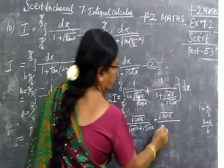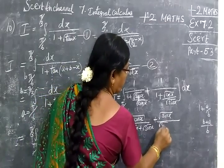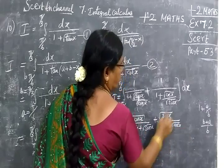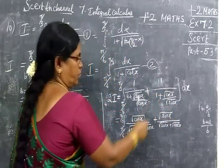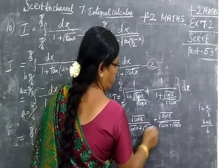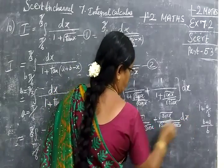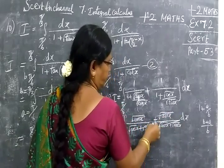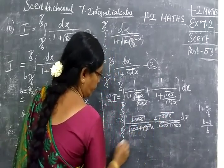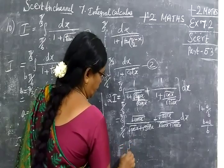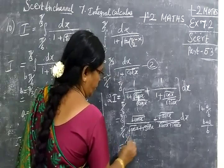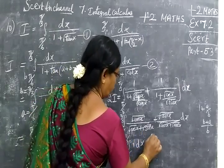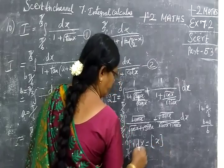Taking the LCM: suppose you have 1 by A by B, taking LCM gives B by B plus A by B. So the numerator becomes root of sin x plus root of cos x, which is the same as the denominator. The denominator cancels, and the integrand becomes 1 dx.